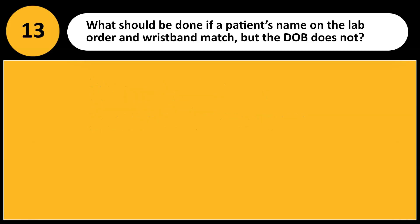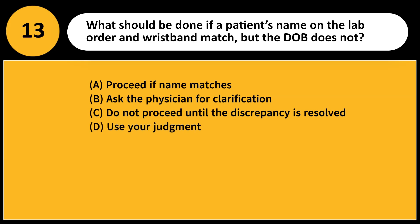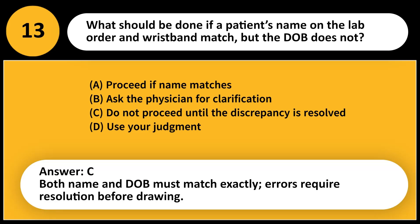What should be done if a patient's name on the lab order and wristband match, but the DOB does not? A. Proceed if name matches. B. Ask the physician for clarification. C. Do not proceed until the discrepancy is resolved. D. Use your judgment. Answer: C. Both name and DOB must match exactly. Errors require resolution before drawing.